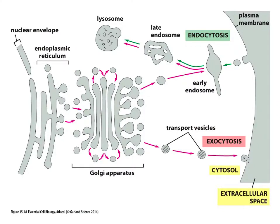Vesicles move between organelles as illustrated in this figure. It's very important that you realize what the pink arrows refer to as well as the green arrows. Let's go for the simple example first: entry into the cell by endocytosis. Whether this is pinching of small amounts of membrane, or pinching of large amounts of membrane as in the case of a white blood cell, the entry of the vesicle ends up at a location along the green pathway.